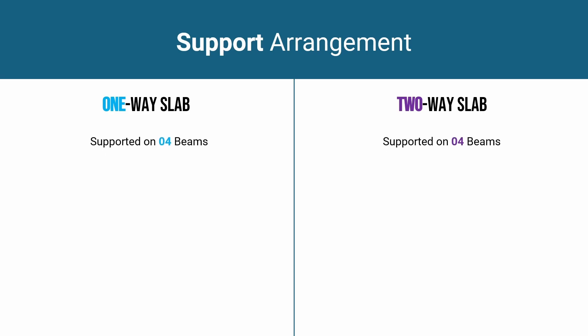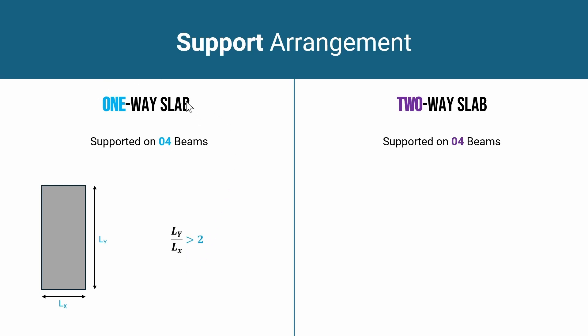Now let's understand how to define the difference between one-way and two-way slabs when both are supported on four beams. This is done by analyzing the ratio of the shorter span to the longer span. If the Ly/Lx ratio is greater than two, it is a one-way slab. If the Ly/Lx ratio is less than or equal to two, it is called a two-way slab.